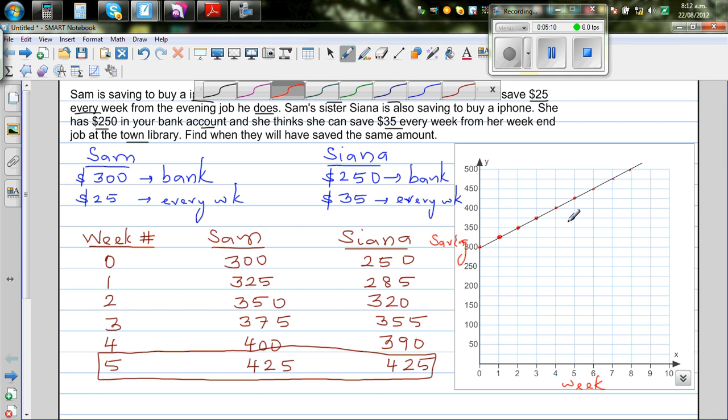If you want to write the equation of this line, let me write Y subscript Sam. If this is your x and this is your y, x would be the week number and y is saving. So can you think of writing an equation between this and this? This is 300 plus, this is increasing by $25, so it will be 300 plus 25x.